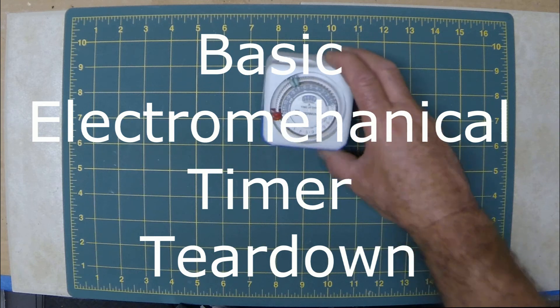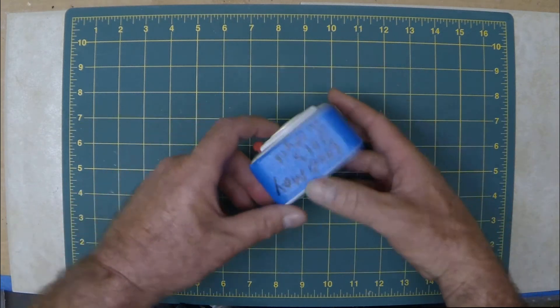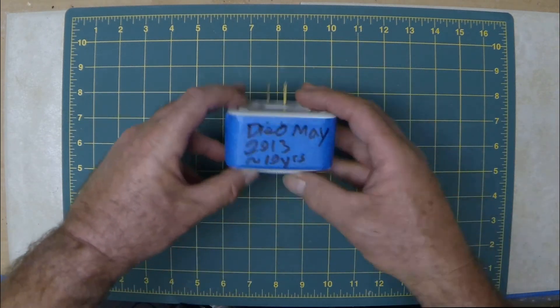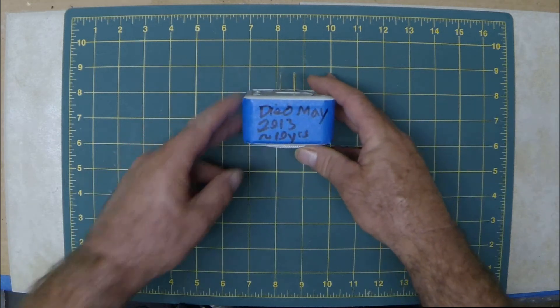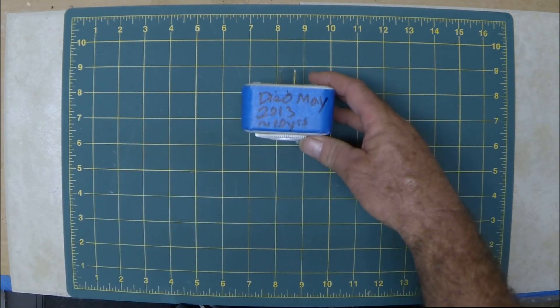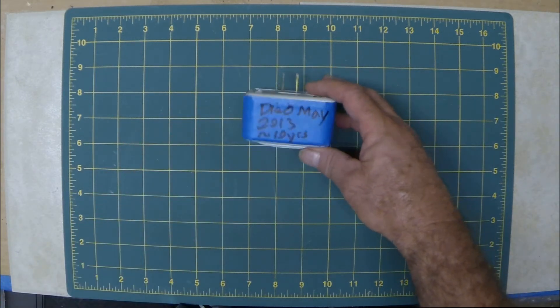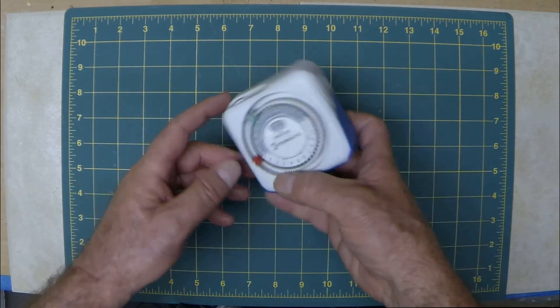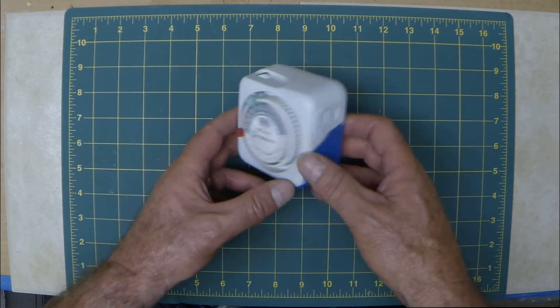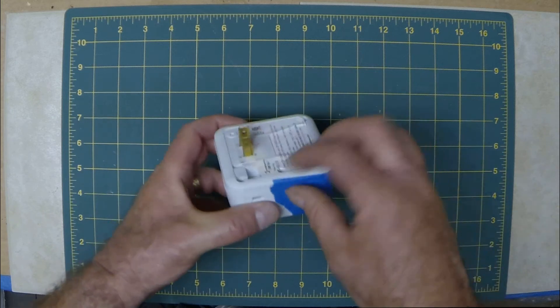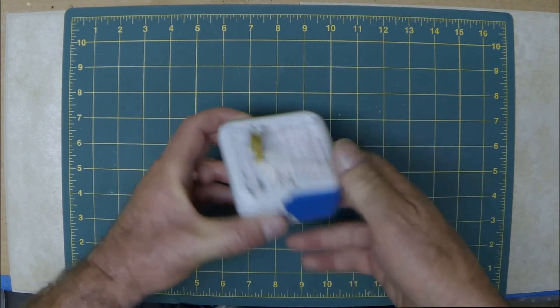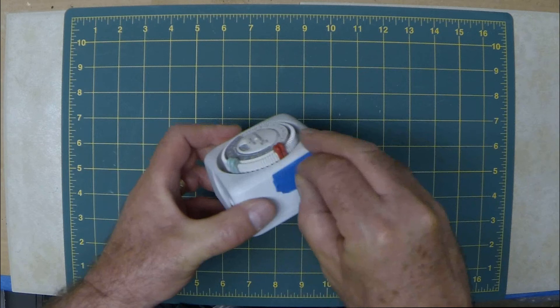Okay, so here's this Intermatic timer. This was on my yard lights transformer and it lasted 10 years. Now this thing is just a basic electromechanical timer and I thought it'd be interesting to tear it apart to see